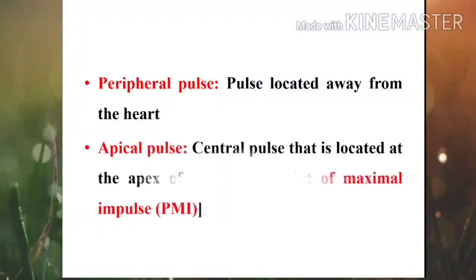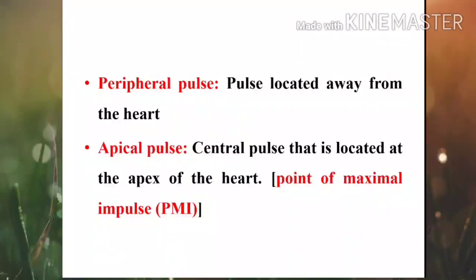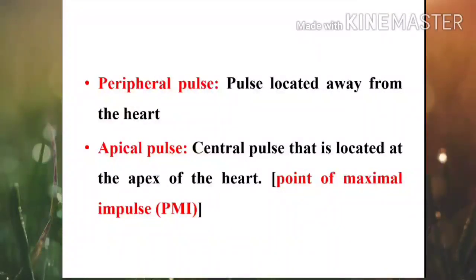Peripheral pulse is the pulse located away from the heart — for example, foot, wrist, or neck. Apical pulse is the central pulse that is located at the apex of the heart, and it can be referred to as the point of maximal impulse (PMI).